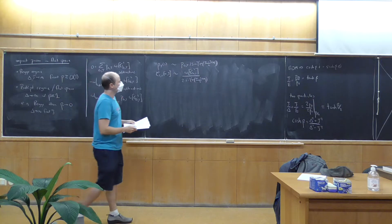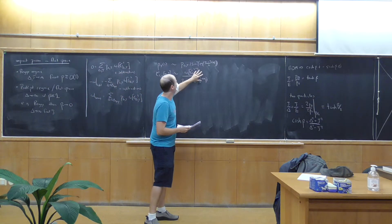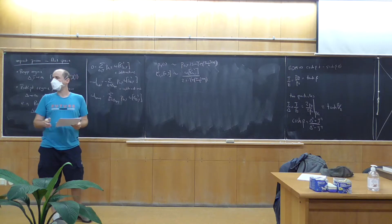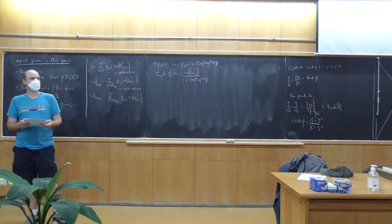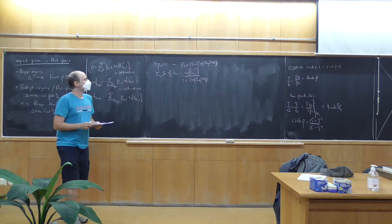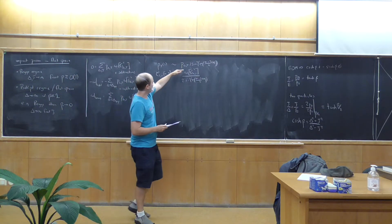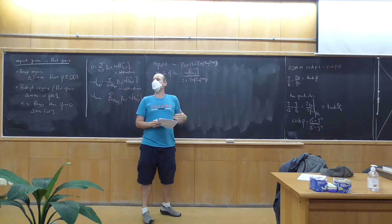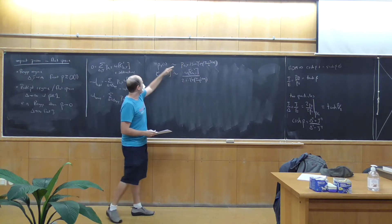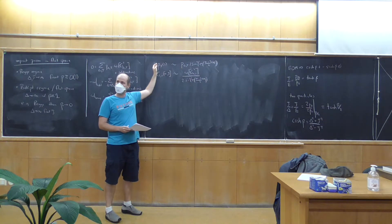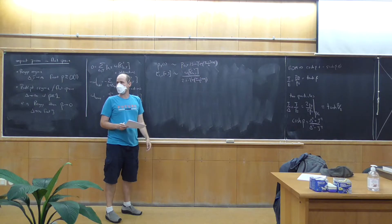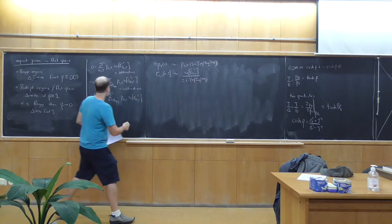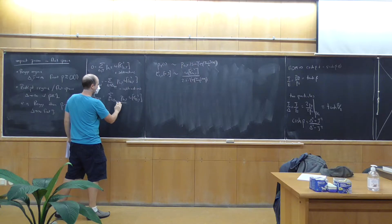The heavy density we discussed was the contribution of a single partial wave to a dispersive sum rule in flat space on the heavy cut. We want the analog in AdS, which are the contributions from heavy operators — the analog of the heavy cut. The quantity rho_J of S is analogous to P_{delta,J} times a sine-squared factor, and the heavy density is analogous to omega acting on G_{delta,J} divided by the sine-squared factor.